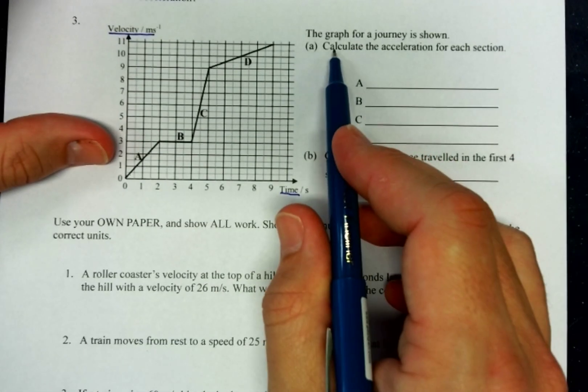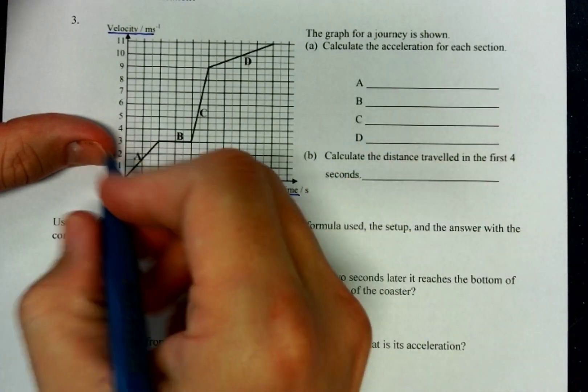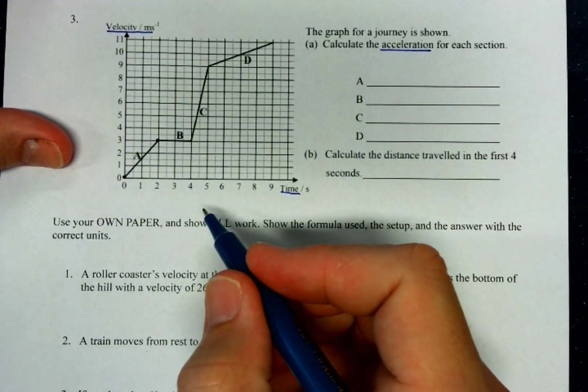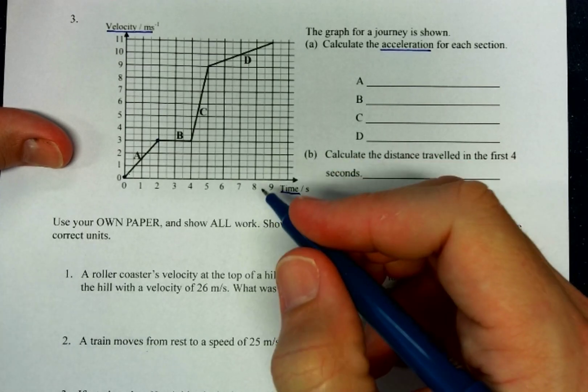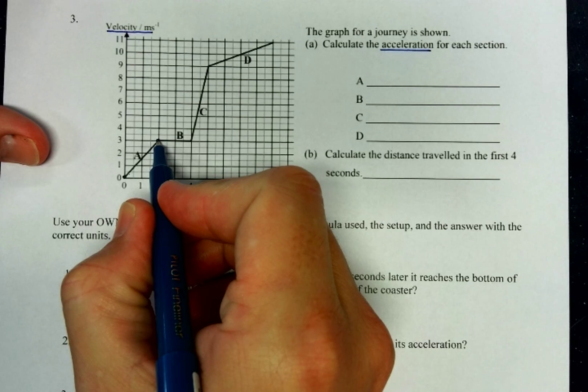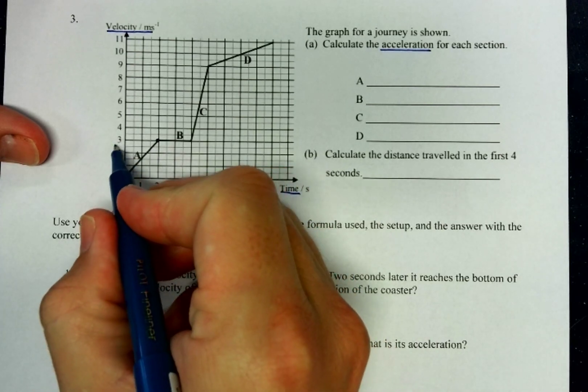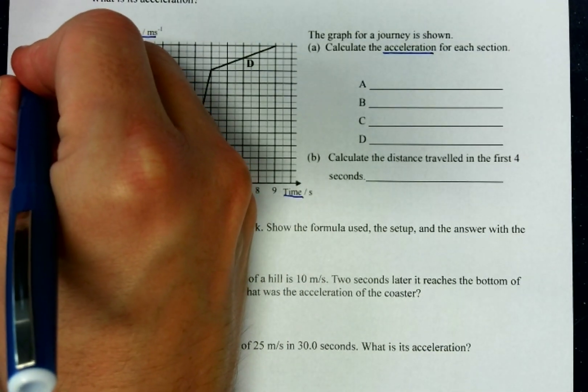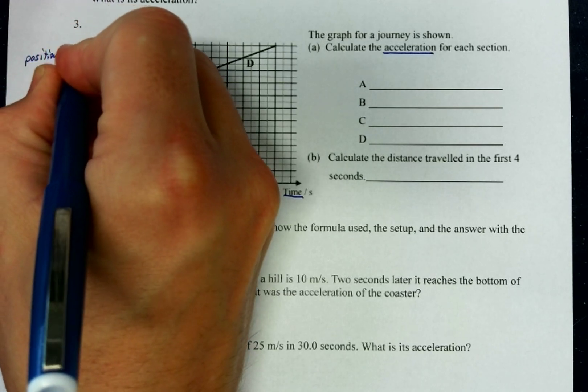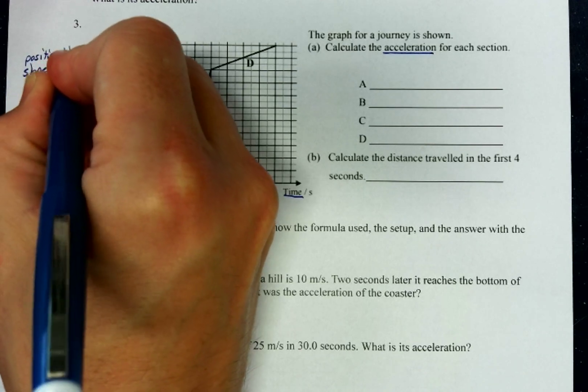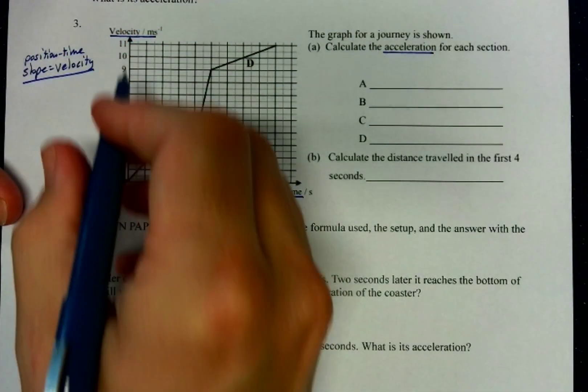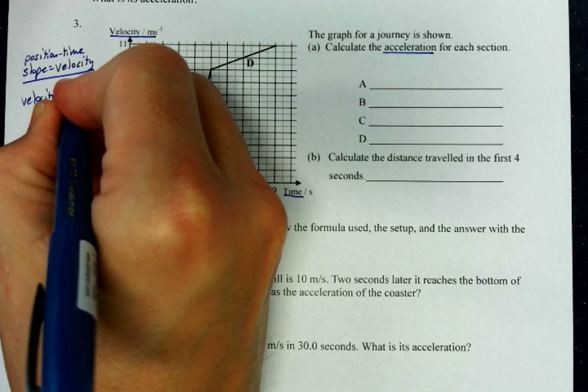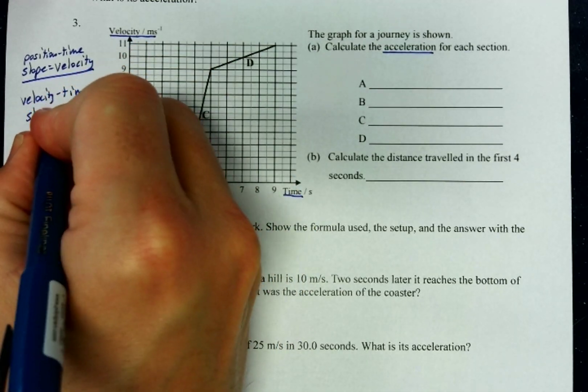In other words, it's kind of speed except it'll be positive when it's moving in the positive direction and it'll be negative when it's moving in the negative direction. So I'm going to go through a couple of these graphs with you.